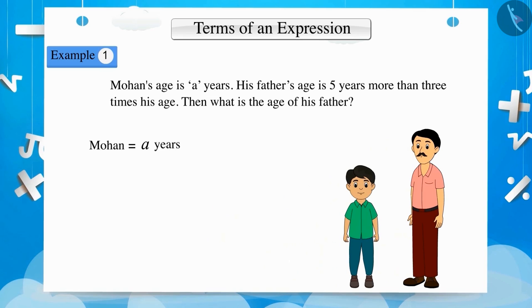Here Mohan's age is A years. Now to represent the age of Mohan's father, we will multiply A with 3. We will get 3A and then we will add 5 to it. Therefore, we get 3A plus 5.